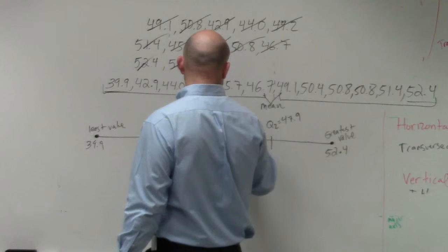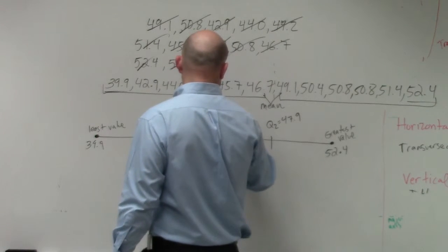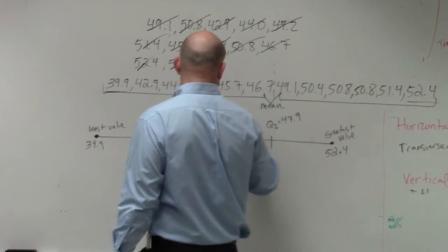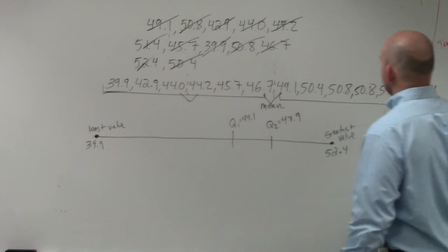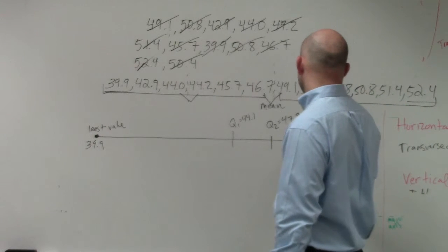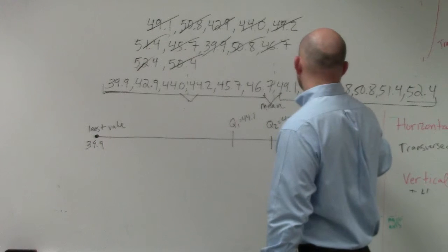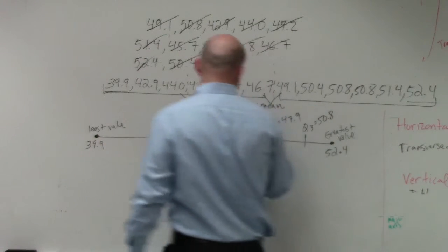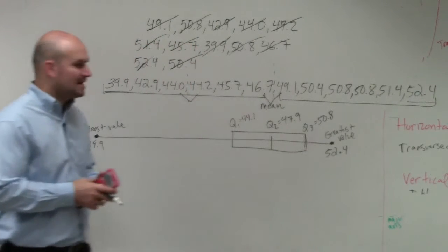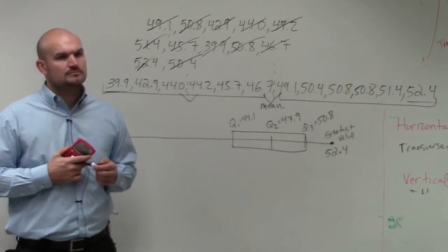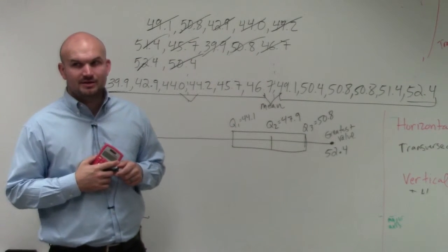And then I go ahead and find the mean between these two, which would be 50.8. And then there's your box and whisker. Does everybody see how I created that? Anybody have any questions?